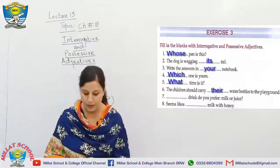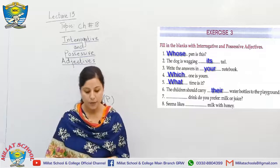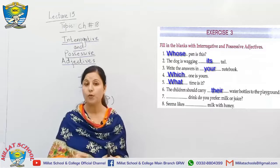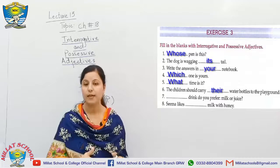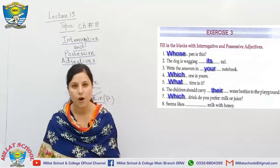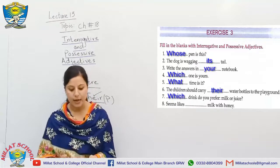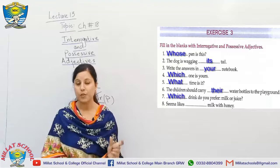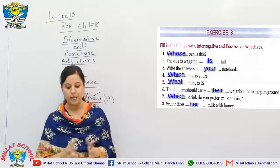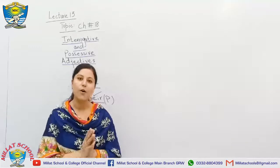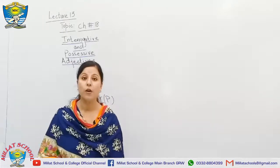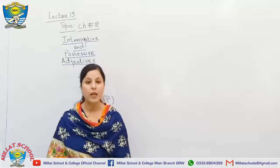Sentence seven: '___ drink do you prefer, milk or juice?' They are asking about two things and you pick one as an answer, so ask: 'Which drink do you prefer, milk or juice?' Sentence eight: 'Seema likes ___ milk with honey.' Since Seema is a girl, we use the possessive adjective 'her' — 'Seema likes her milk with honey.'